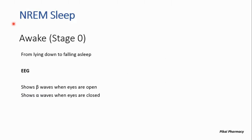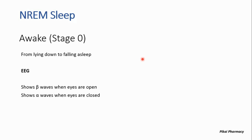Now we'll discuss the different stages of NREM sleep. The initial stage is known as stage 0, where we are awake. This is the period of time from lying down to falling asleep.